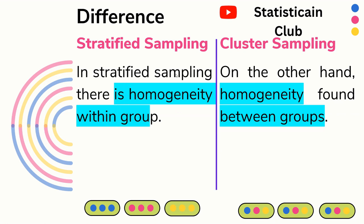Third difference: in stratified sampling, there is homogeneity within groups. As you can see, each group is homogeneous — the first group has blue balls, the second has pink balls, and the third has yellow balls. On the other hand, in cluster sampling, homogeneity is found between groups. The first cluster and second cluster are similar to each other because each contains blue, pink, and yellow balls.